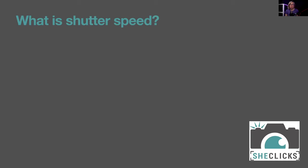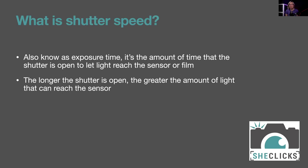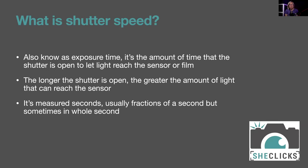Shutter speed, also known as exposure time, is the amount of time the shutter is open to let light reach the sensor or film. The longer the shutter is open, the greater the amount of light that can reach the sensor — like opening curtains longer lets more light through than opening and closing them quickly. Shutter speed is measured in seconds, usually fractions of a second, but sometimes whole seconds or even minutes.